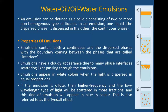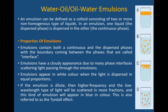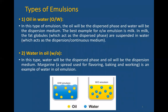The properties of emulsion: emulsion can contain both a continuous and dispersed phase, and the boundary between the two phases is called the interface. Number two, emulsions have a cloudy appearance due to many phase interfaces scattering light passing through the emulsion — because once you prepare emulsion from oil and water, it will appear cloudy. Number three, emulsion appears white when light is scattered equally. There is also the Tyndall effect — some blue light will be reflected from the emulsion; that is the Tyndall effect.